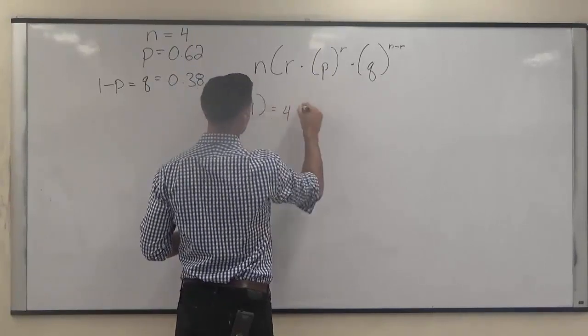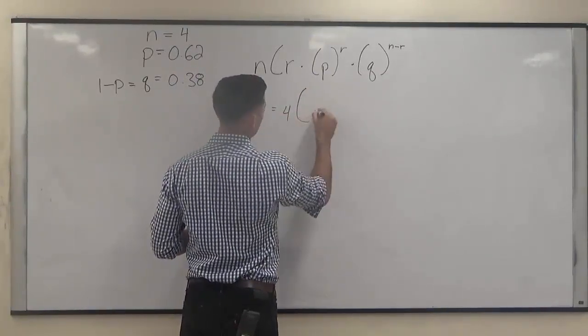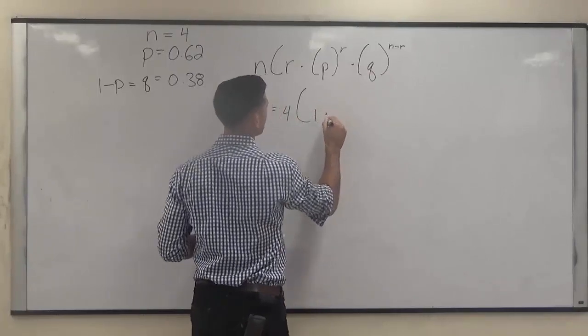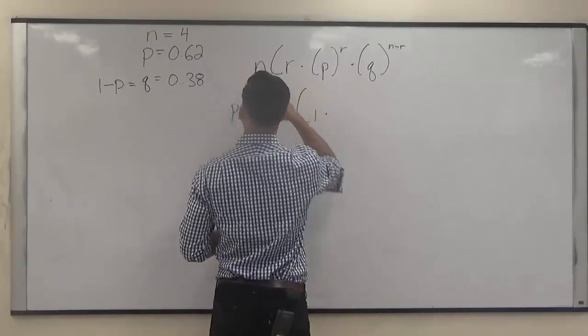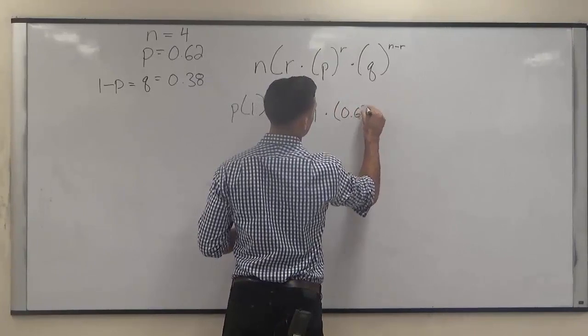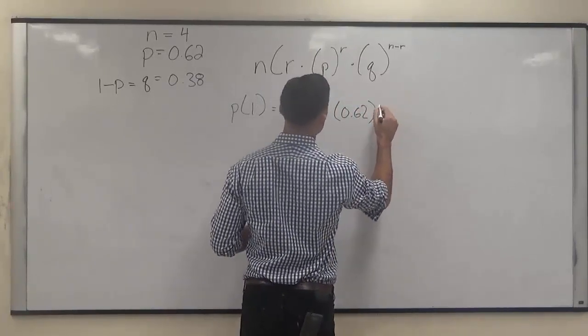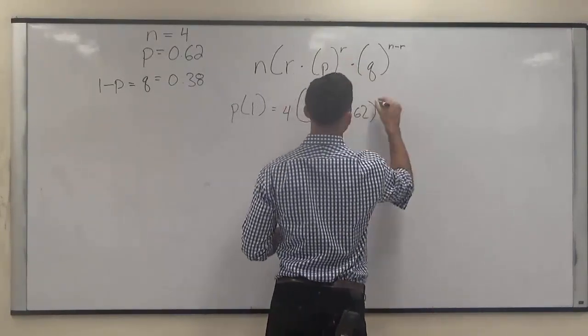our N is 4 choose exactly 1, times the probability of the event occurring to the R, which is 1,